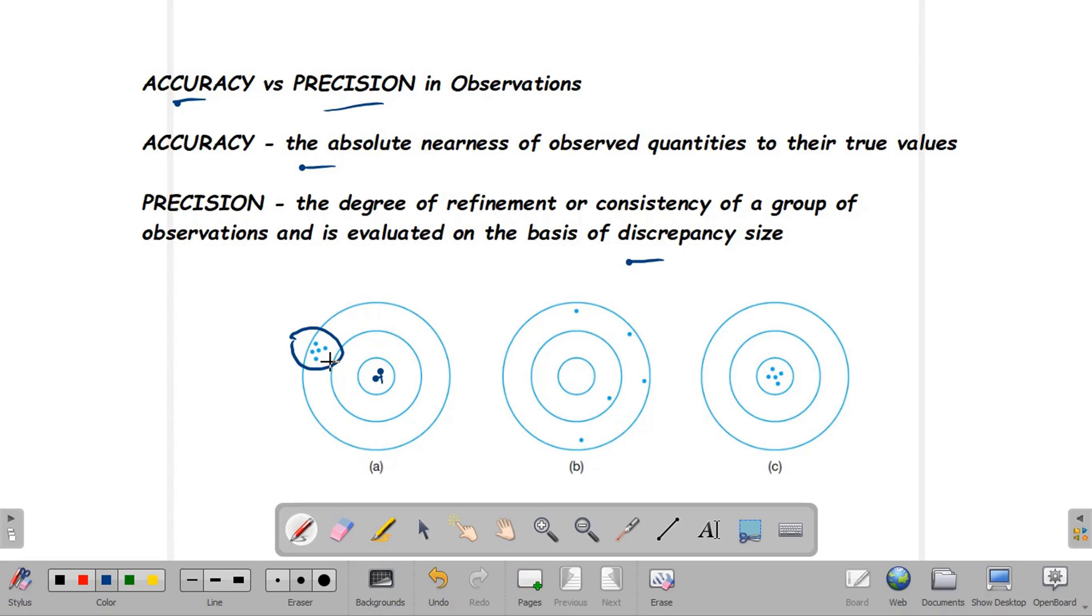Therefore, the values of the observed measurements are precise, but they're far from the true value. This group represents precise measurements, but they are not accurate.